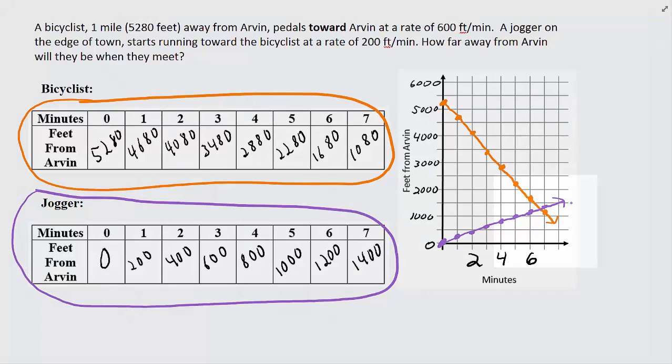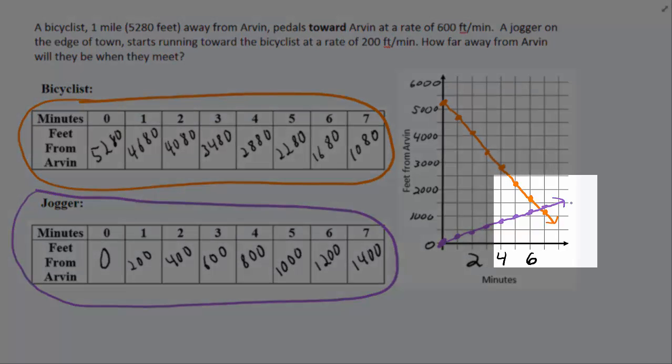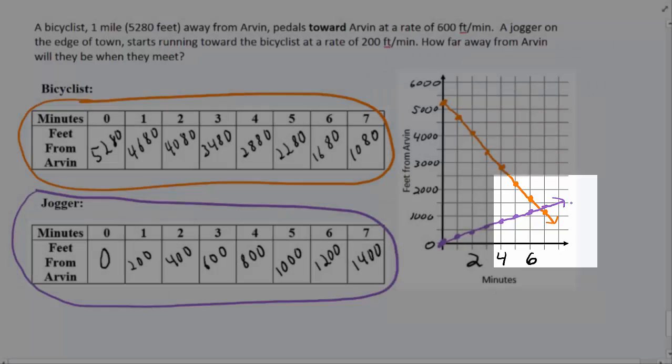We notice that the lines cross somewhere between 6 and 7 hours, just like we noticed from the table.